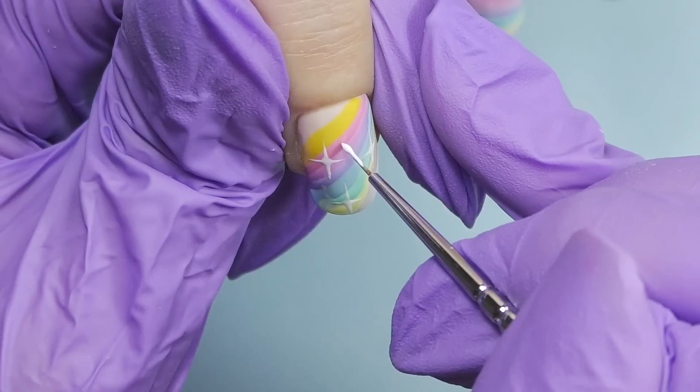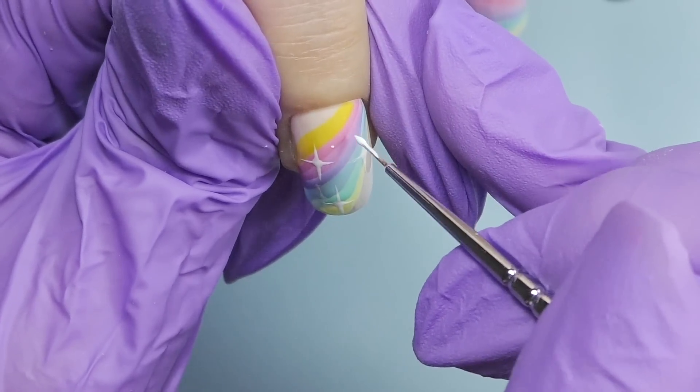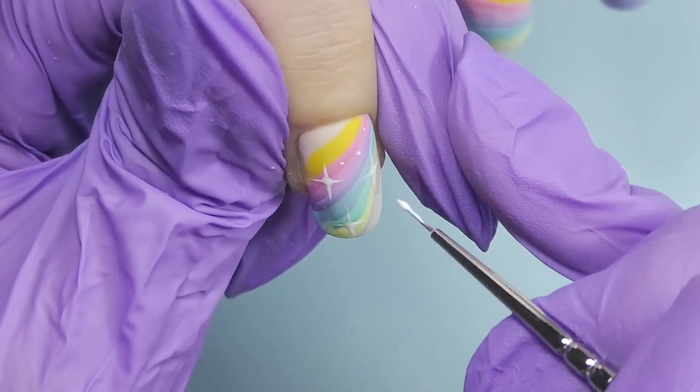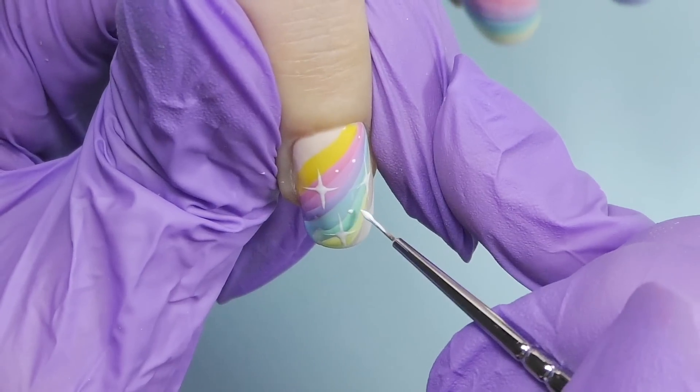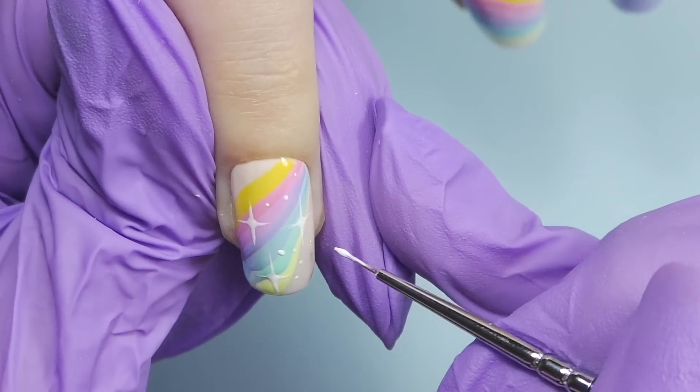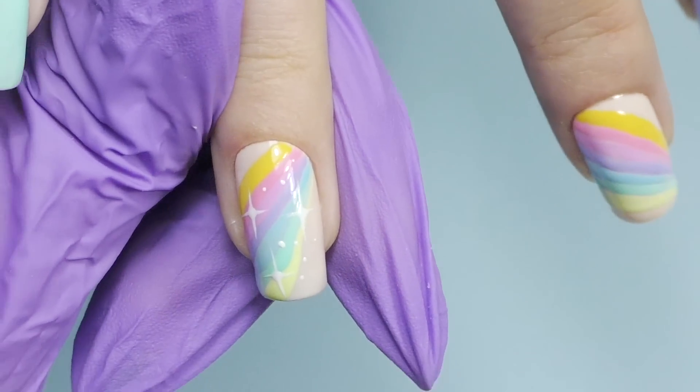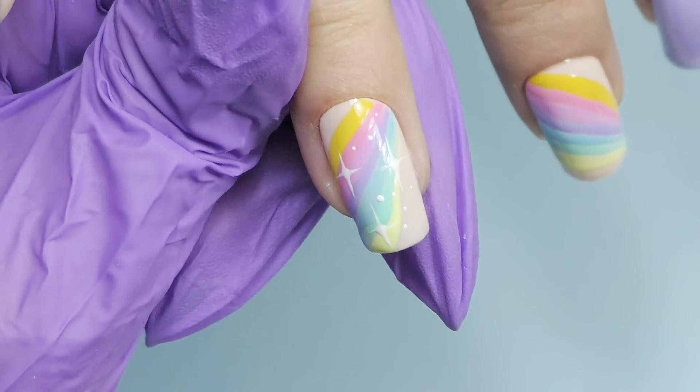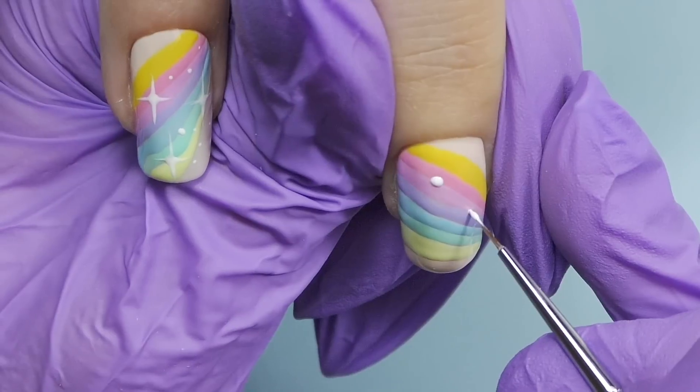And this is how we have these perfect dreamy stars. And then I will add some smaller dots to complete the look. At first, I was a little worried if we would have enough space on her nails to do this design, because maybe we should have done it on nail extensions, but now I think they look perfect.